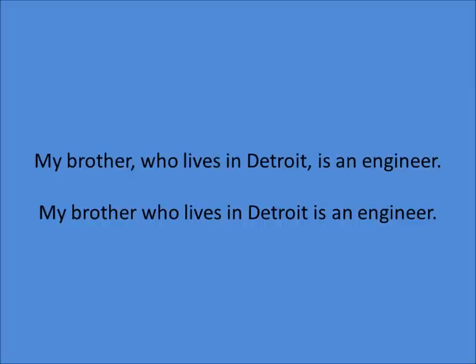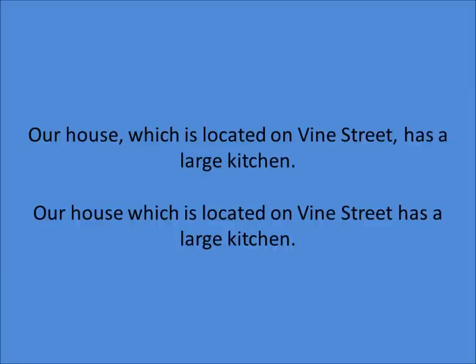Let's look at one more set of examples: 'Our house, which is located on Vine Street, has a large kitchen' versus 'Our house which is located on Vine Street has a large kitchen.' Again, these two sentences use the exact same words but tell us slightly different information. The first sentence, which has commas, tells us that the adjective clause is extra information, so we don't have to specify one house out of many — there is only one house. The second sentence has no commas, which means we have more than one house, so we have to identify which house we're talking about. So one piece of information you can take away from the second sentence is that because there are no commas, we're rich.